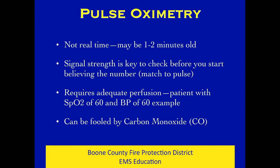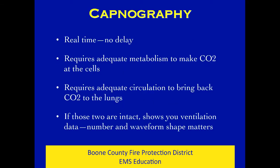Before you believe the pulse ox, make sure it can count the pulse. Watch the blinking light or waveform indicator and match that to the patient's pulse - if those two match, the oximetry reading is coming from a strong signal. You also need adequate perfusion - if the patient's pulse ox says 60 and their BP is 60, we don't really know what their true pulse ox is. Get the BP to normal range first. Also, carbon monoxide gives a falsely high pulse ox reading.